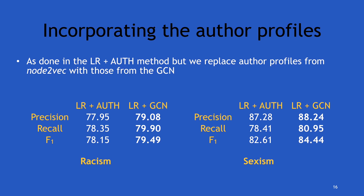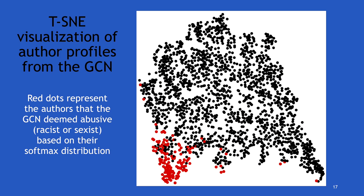When we incorporated these GCN embeddings instead of the Node2Vec embeddings, we see significant improvements across all metrics on both classes, racism and sexism. Also, the GCN is able to provide softmax distributions for the author nodes. When we project the embeddings — the profiles — into low-dimensional space, we see that the abusive authors deemed racist and sexist according to the softmax distribution are clustered together in a small region of the visualization.